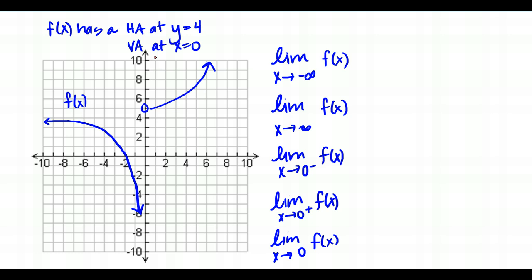In the second example, f of X has a horizontal asymptote at y equals 4 and a vertical asymptote at x equals 0. We have a limit at infinity to begin with: the limit as X approaches negative infinity of f of X. Negative infinity is way over to the left, and as I approach it my function gets closer and closer to this horizontal asymptote at 4. So this first limit is 4.